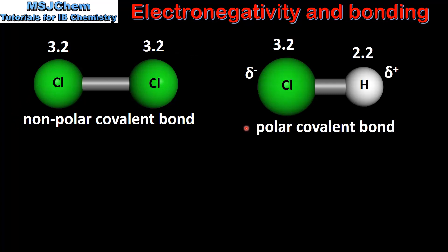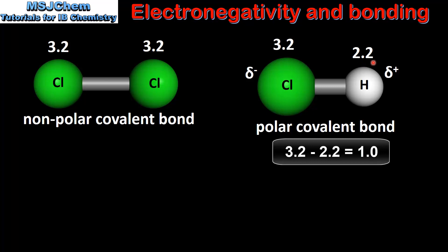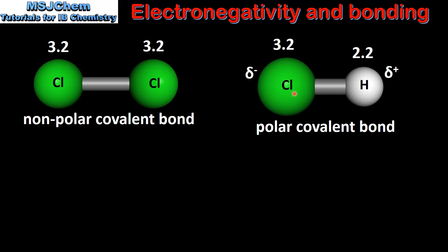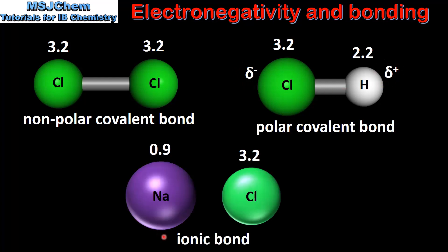Next we look at a polar covalent bond. Here we have a molecule of hydrogen chloride which is composed of one hydrogen atom and one chlorine atom. The difference in electronegativity between hydrogen and chlorine is one unit, therefore this is a polar covalent bond. Because of the difference in electronegativity between the two atoms we have unequal sharing of electrons. The chlorine atom pulls the bonding electrons towards itself, giving the chlorine atom a partial negative charge and the hydrogen atom a partial positive charge.